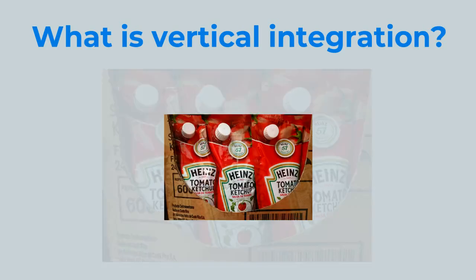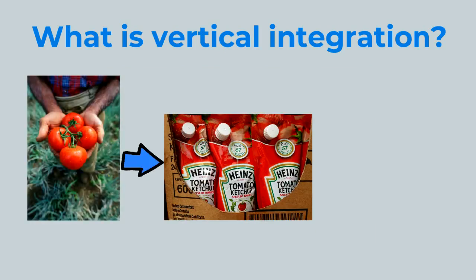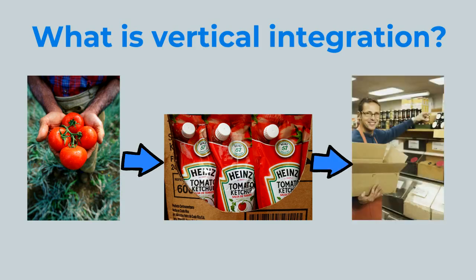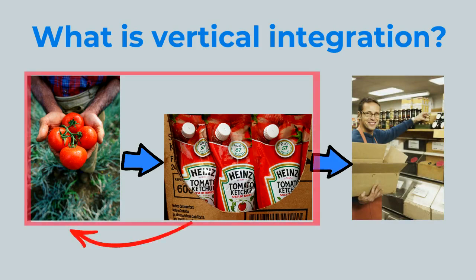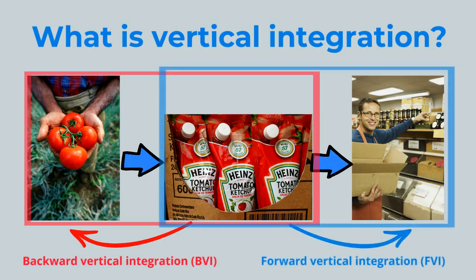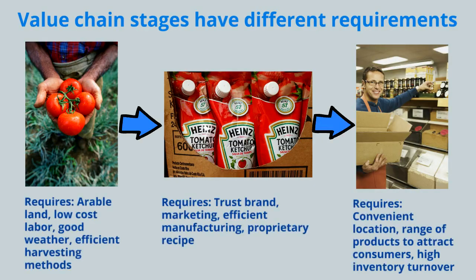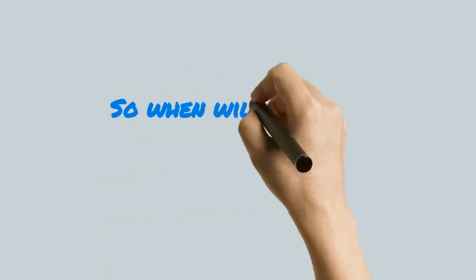Suppose you have a ketchup manufacturer. One of the major supplies to the ketchup manufacturer is tomatoes grown on a tomato farm. After the ketchup is manufactured, it is sold to a distributor like a retail grocer. If the ketchup manufacturer gets into the business of growing its own tomatoes, that's backward vertical integration. If it gets into retail outlets, that's forward vertical integration. The competencies required for a tomato farm are very different from those for a ketchup manufacturer or retailer, so these businesses are not closely related in terms of competencies and assets even though they share a value chain.